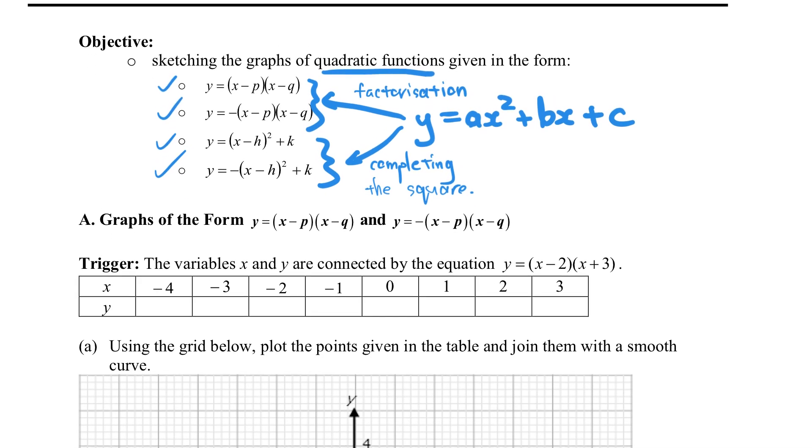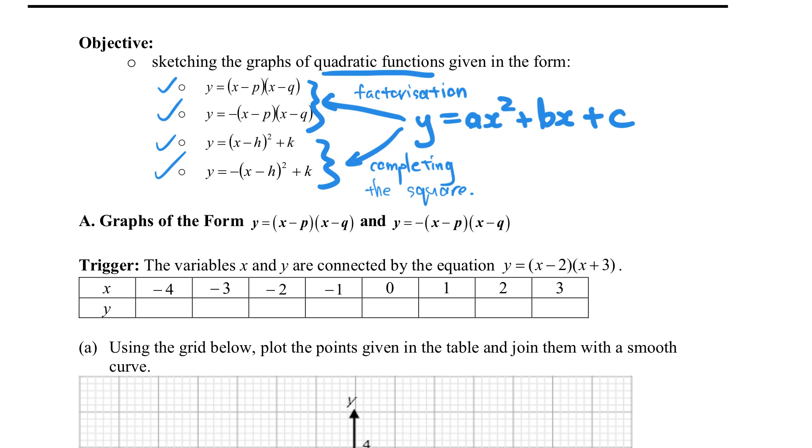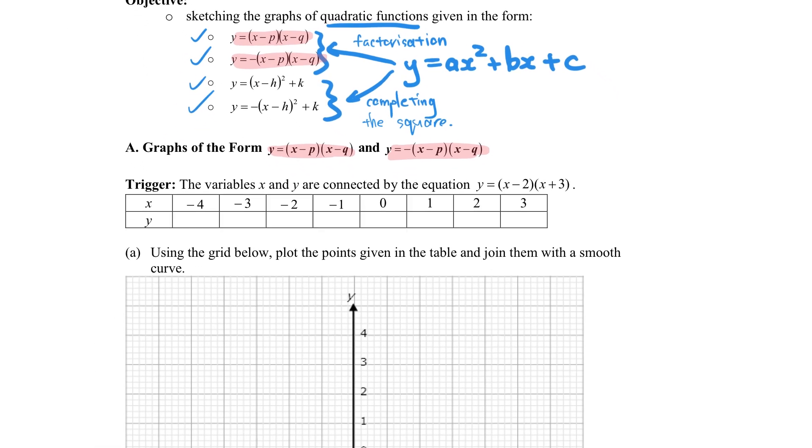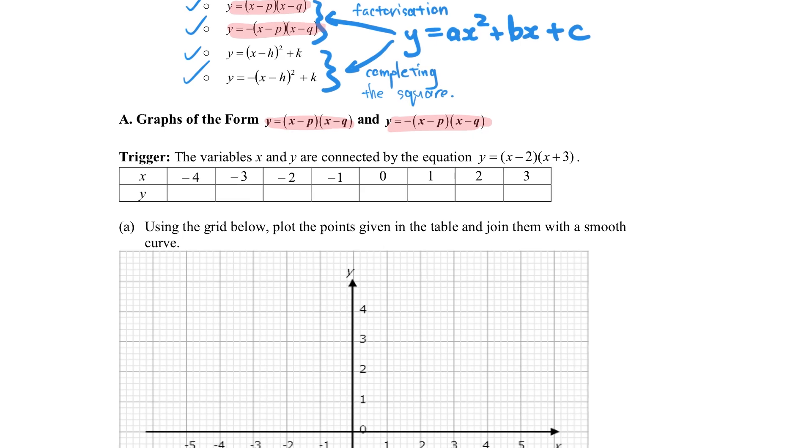So any quadratic function, if you end up doing factorization or completing the square, we are interested in sketching either of these two in nature. So first, we're going to focus on the ones that look like this, of the factorized form. We're going to use an example of an actual graph that you have as a plot to observe some important details that we talked about. So very quickly, take a calculator, and we're going to calculate and fill up this row of values here.